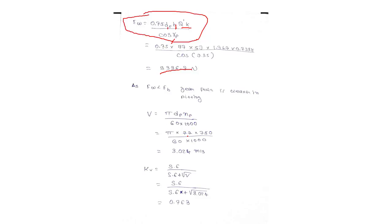To find kv we need to find the velocity. The equation for velocity is pi dp np upon 60 into 1000. We have pitch circle diameter for pinion and we have pinion rotation speed. The answer for velocity is 3.025 meter per second.